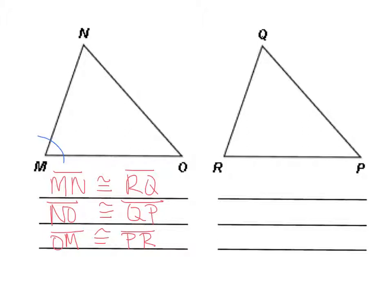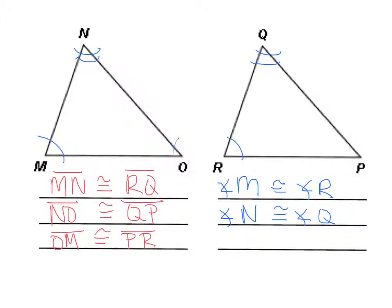Now moving on to our congruent angles. Angle M, since it's in the bottom left, is congruent to angle R. Since angle N is on top and Q is on top there, angle N is congruent to angle Q. And our last one is that angle O is congruent to angle P.